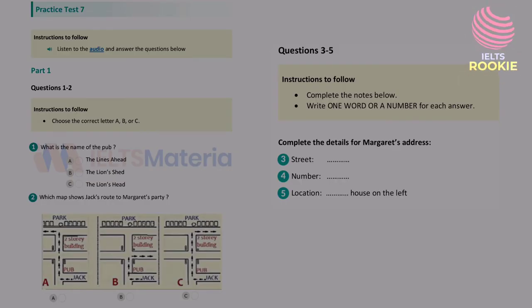Part 1. Jack is on his way to Margaret's house party. He is phoning her for directions. First, you will have some time to look at questions 1 to 5. Now listen carefully and answer questions 1 to 5. Jack has got lost on his way to Margaret's party. He is phoning her for directions.